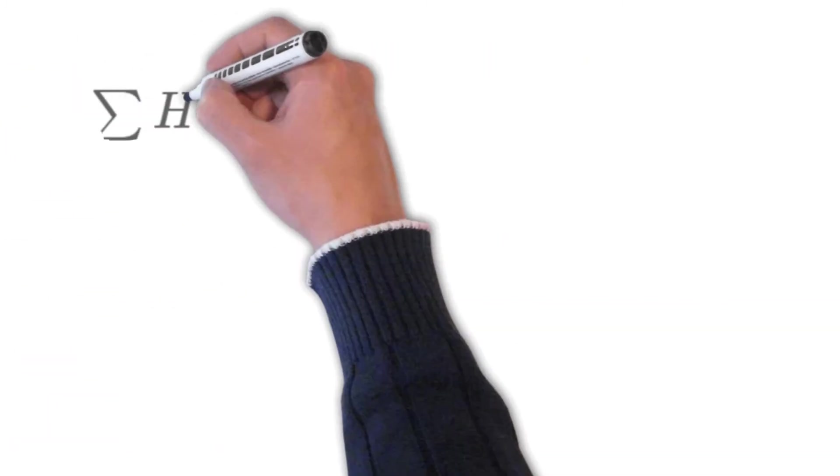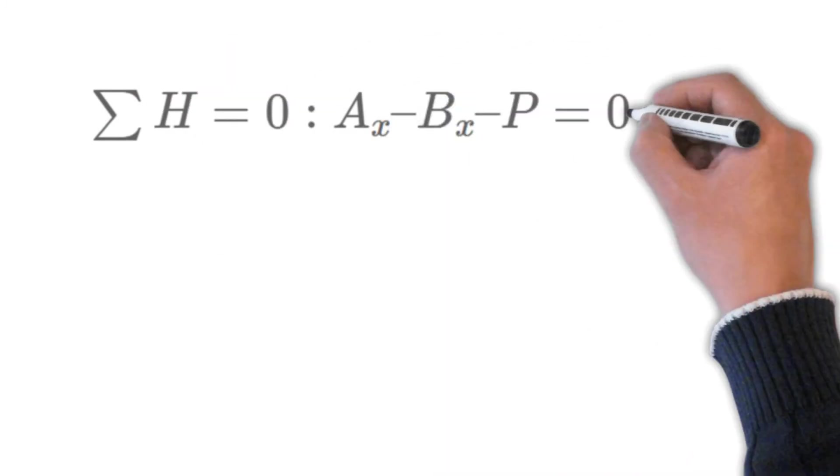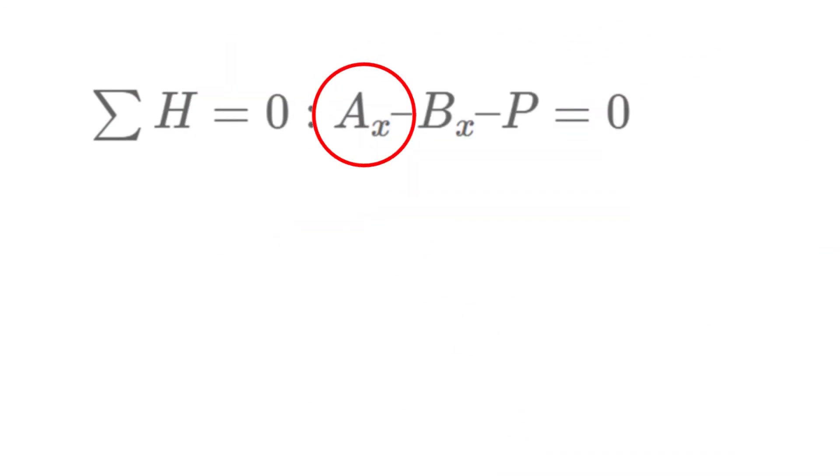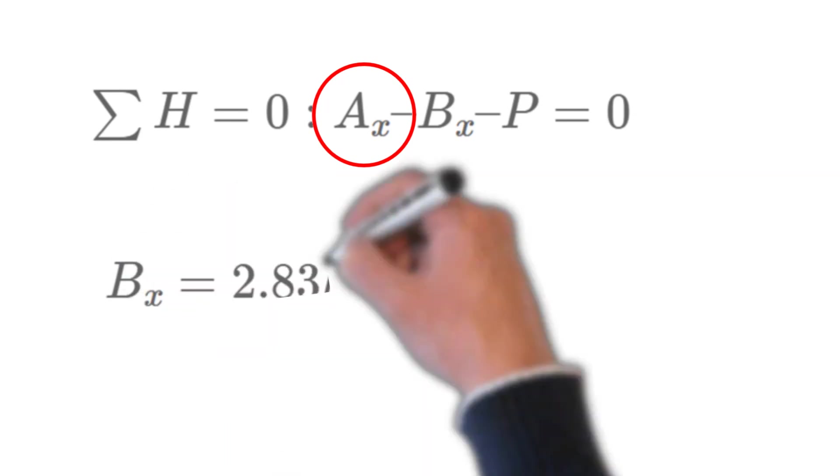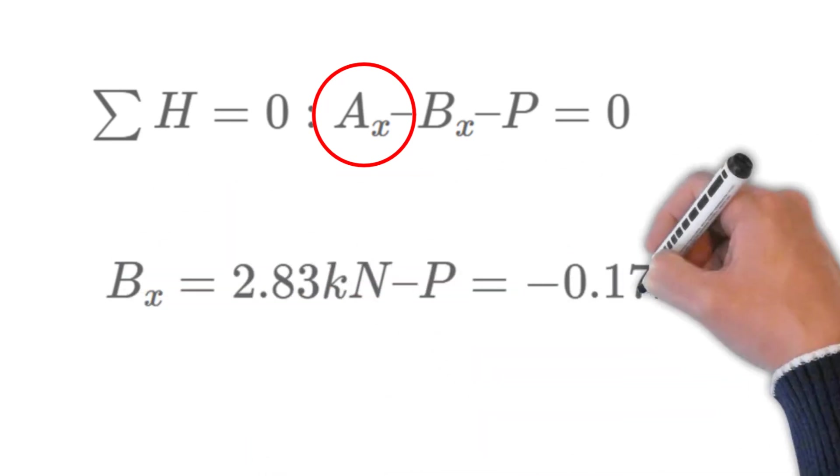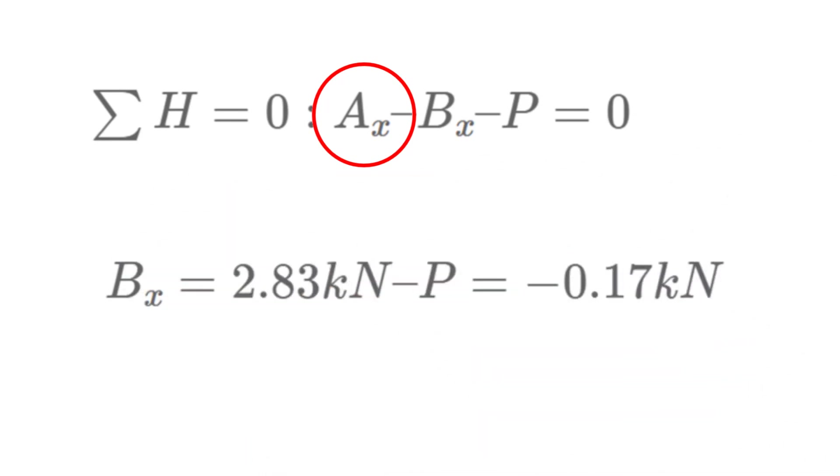Now the final step is to insert Ax in the horizontal equilibrium equation and solve for Bx. So all horizontal forces are equal to zero: Ax minus Bx minus P equals zero. Now this leads us if we solve it for Bx we have 2.83 kN minus P and the result of Bx is minus 0.17 kN.